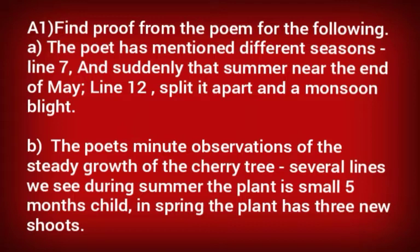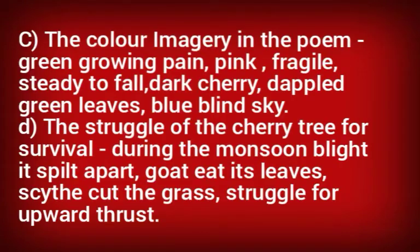Sub-question B: the poet's minute observation of the steady growth of the cherry tree. In several lines we see that during the summer the plant is small — a five-months child — and suddenly in spring he saw the plant has three new shoots.